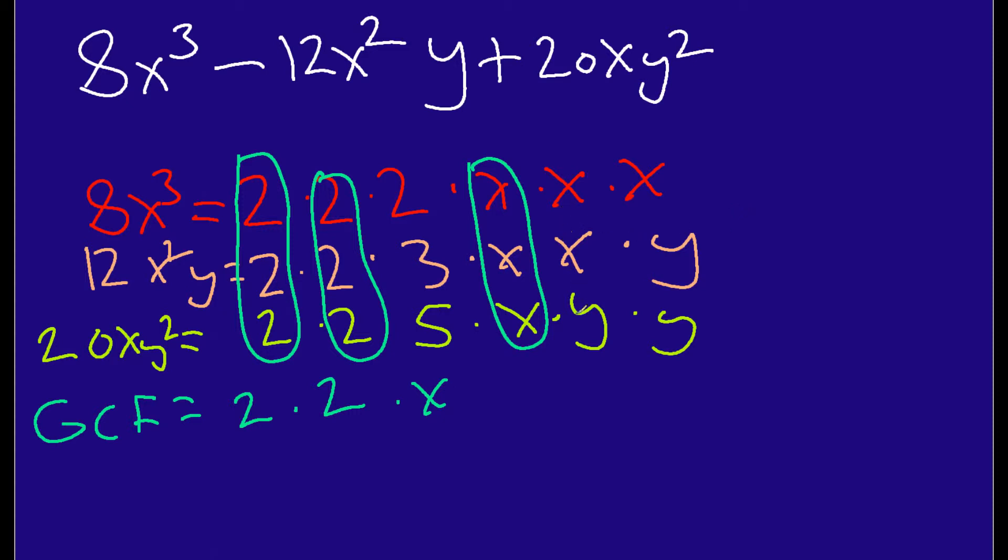The other ones, I do not bring them down because they're not in every single column. It has to be the same number or the same variable, the same constant or the same variable every single time. Now, when I do this, I simplify my expression here. So, my GCF is going to be 2 times 2 is 4, 4 times x is 4x. That is the greatest common factor among these three terms here.